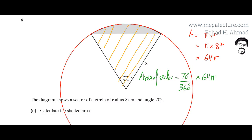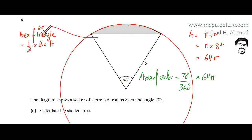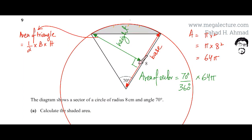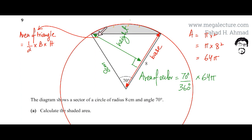Next, we find the area of the triangle. The formula is area equals half times base times height. Looking at this triangle, the base is 8 centimeters. The other side of the triangle is also the radius of the bigger circle, so it is also 8 centimeters. We need to find the perpendicular height from the base, which is not directly given.